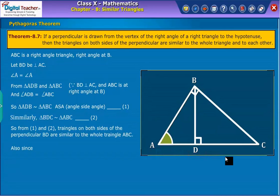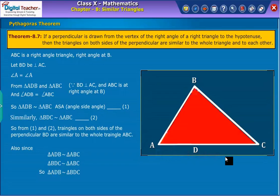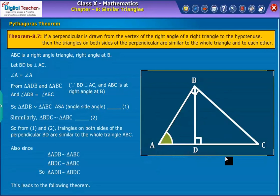Also, since triangle ADB is similar to the triangle ABC, and triangle BDC is similar to triangle ABC, therefore triangle ADB is similar to triangle BDC. This guides to following theorem.